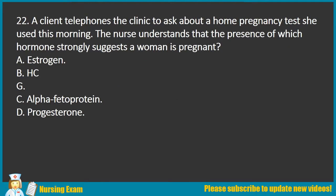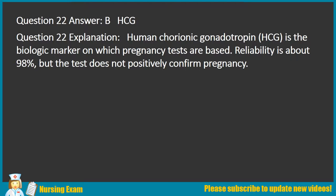Question 22. A client telephones the clinic to ask about a home pregnancy test she used this morning. The nurse understands that the presence of which hormone strongly suggests a woman is pregnant? A. Estrogen. B. HCG. C. Alpha-fetoprotein. D. Progesterone. Answer: B. HCG. Explanation: Human chorionic gonadotropin (HCG) is the biologic marker on which pregnancy tests are based. Reliability is about 98%, but the test does not positively confirm pregnancy.